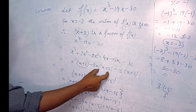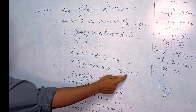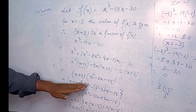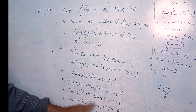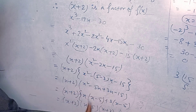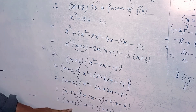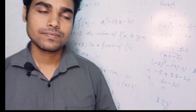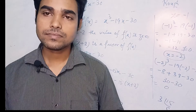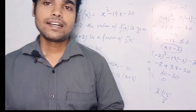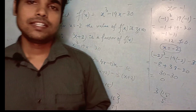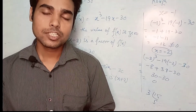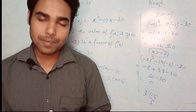Taking x plus 2, x plus 2, x plus 2 as common and keeping the remaining terms in the bracket, we factorize the remaining part by the middle term method, giving the final result: x plus 2, x minus 5, x plus 3. Friends, I think it is helpful. Please share, like, and subscribe to our channel. Thank you.